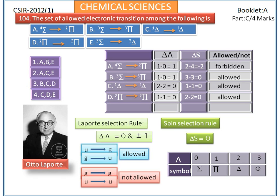Next, option E: triplet Σ to triplet Δ. Here delta lambda = 2 and delta S = 0. Even though it obeys the spin selection rule, it does not obey the Laporte selection rule. So it is a forbidden transition. This table clearly shows that B, C, and D transitions are allowed, whereas A and E transitions are forbidden. Therefore, the correct answer is the third option: B, C, D.